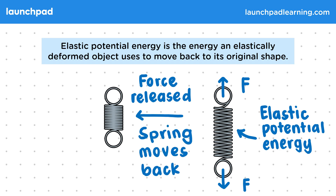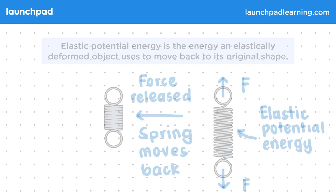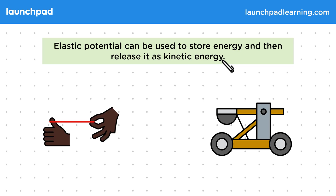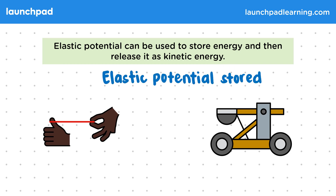So is there any way we can use elastic potential energy practically? Elastic potential can be used to store energy and then release it as kinetic energy. For example, think of firing an elastic band or a catapult. We store elastic potential in these devices by deforming the elastic band or the springs in the catapult mechanism elastically, and then they're locked in place.